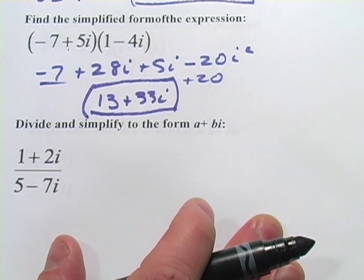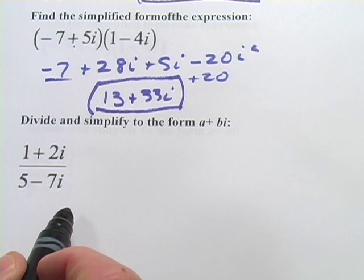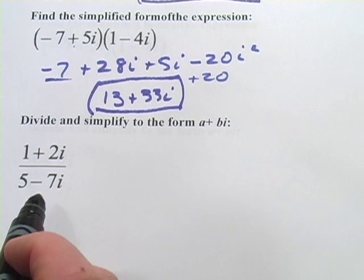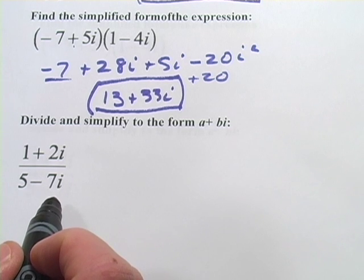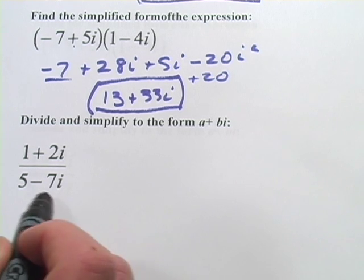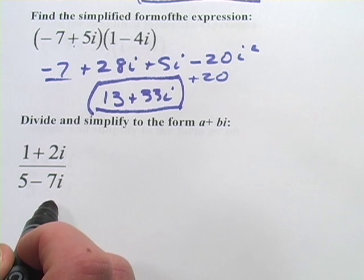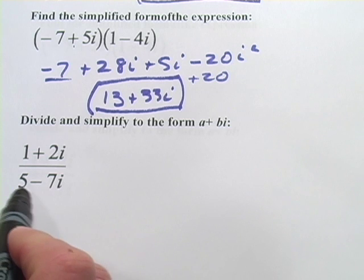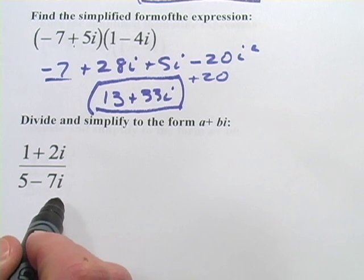Now, the only tricky one is this division here. We've got (1 + 2i) / (5 - 7i). And I think the way to think about this one is to remember that i is really a radical, it's the square root of negative 1. And when we see a radical sign in a denominator, we want to get that out of there. And the way we do it here, because we've got a binomial here, is that we would multiply by the conjugate.